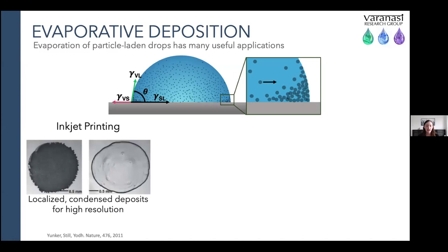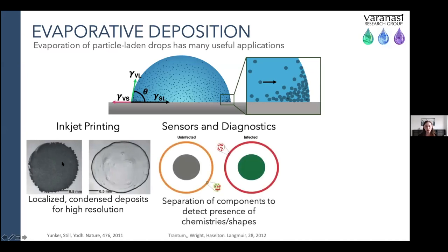This traditionally has the most application for inkjet printing, where we really want a nice localized condensed deposit with particles settled uniformly rather than a coffee ring effect, because a uniform deposit gives higher resolution. It's also finding new applications in sensors and diagnostics, where a certain chemistry or particle shape inside a drop can reveal differences in deposit morphology with and without a target compound, making it a sensitive tool for different types of sensing.